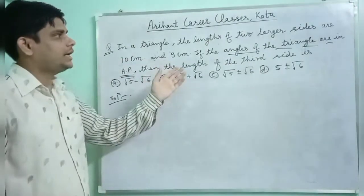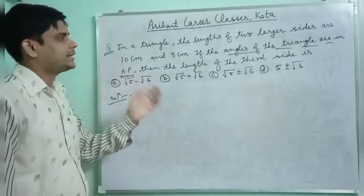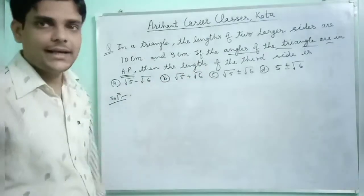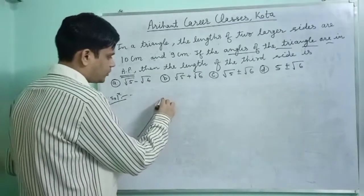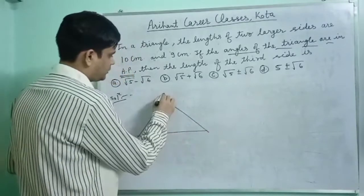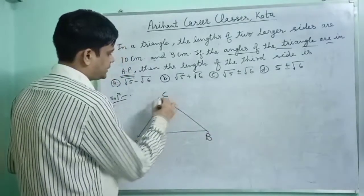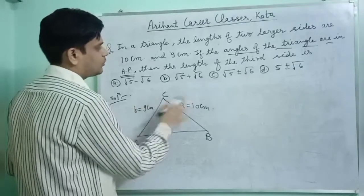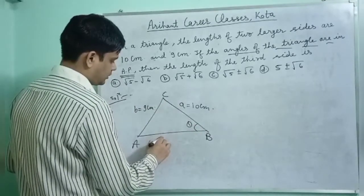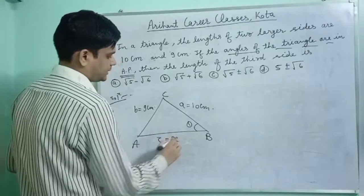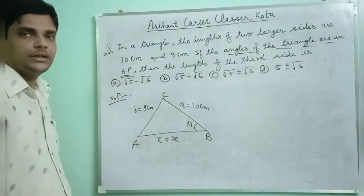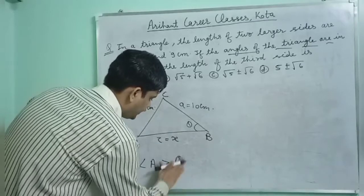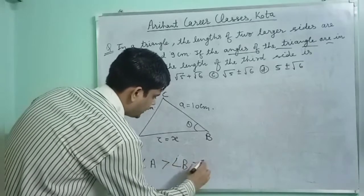In a triangle, the length of the two larger sides are 10 cm and 9 cm. If the angles of the triangle are in AP, then find the length of the third side. Draw triangle ABC: side A is 10 cm, side B is 9 cm, and side C is X. From the figure, angle A is greater than angle B is greater than angle C.